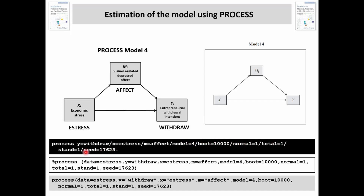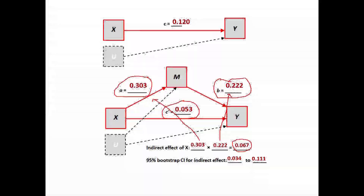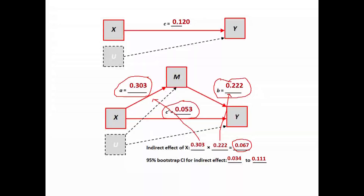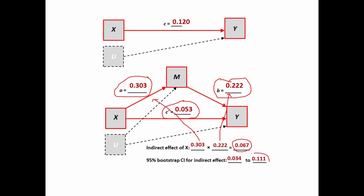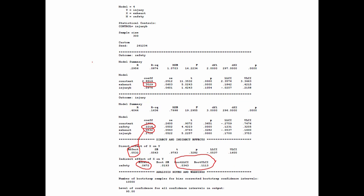Everything else you see here are options — they're not required. The bootstrap confidence intervals for the indirect effect: we're just looking for the endpoints, so you've got to know where to find those. They are down here. So 0.034 to 0.111. I saved the total effect for last because if you went hunting for that, you won't find it here — there's nothing on here that provides that, so you're going to have to calculate it yourself.